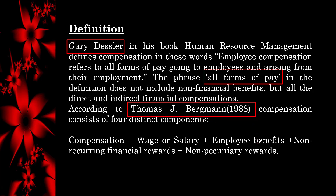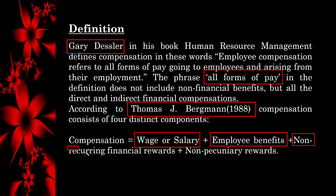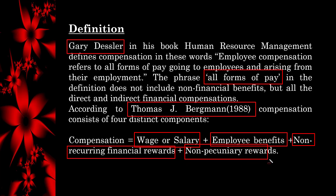According to Thomas J. Bragman, compensation consists of four distinct components: wage or salary, employee benefits, non-recurring financial rewards, and non-pecuniary rewards.